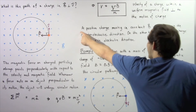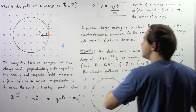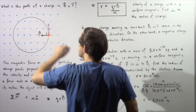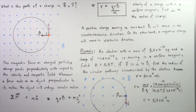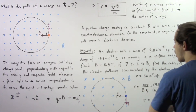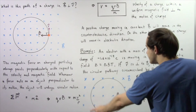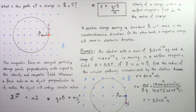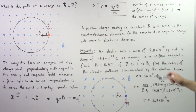A positive electric charge moving in a constant magnetic field that is perpendicular to the motion will move in the counterclockwise direction. A negative charge will move in the clockwise direction. Now let's look at the following example. An electron with a mass of this quantity and a charge of this quantity is moving in a uniform magnetic field with B equal to 0.5 teslas. If the velocity of our charge is always perpendicular to our magnetic field, find the radius of the circular pathway circumscribed by the electron. Assume the velocity at this moment points downward and has a magnitude of 5 times 10 to the 7 meters per second.